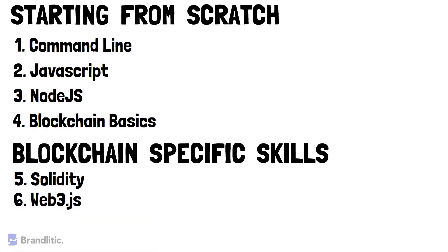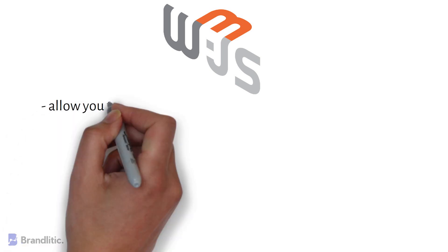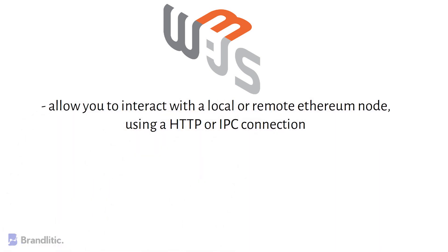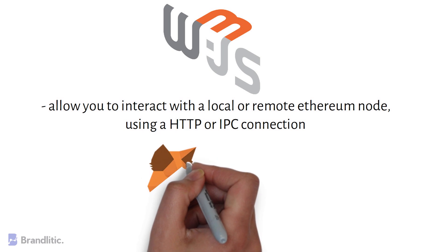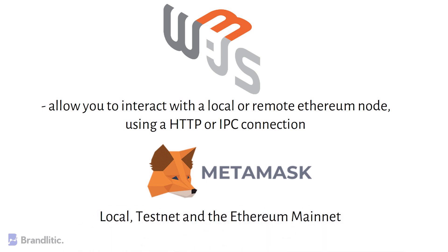6. Web3.js. Web3.js is a collection of libraries that allows you to interact with a local or remote Ethereum node using an HTTP or IPC connection. Web3.js bridges the gap between the traditional internet and the decentralized world. It's used to connect an Ethereum blockchain to a client browser, usually through a browser extension like MetaMask. Unfortunately, most common web browsers don't support Web3.js out of the box, which is why MetaMask is used for this purpose. The Web3 library is easily installed into a JavaScript project and allows your decentralized application to run and retrieve information to and from a blockchain defined by the user. Local, testnet, and Ethereum mainnet can all be connected through MetaMask and Web3.js.